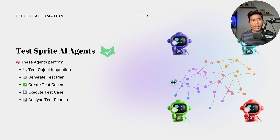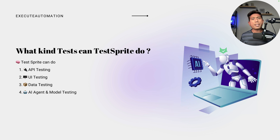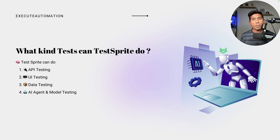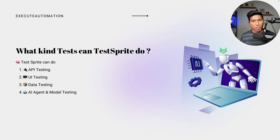The next question is: what kind of tests can Test Sprite actually do? You can think of anything you want to test in your application. You can do API testing, UI testing, data testing, and you can also use Test Sprite to do AI agent and model testing. All of these operations can be achieved with Test Sprite, which is quite amazing.